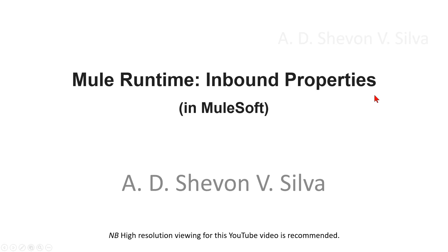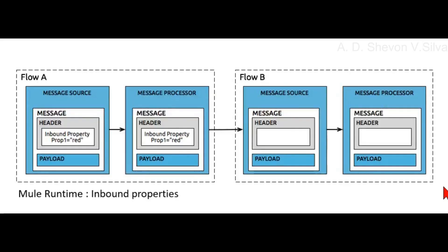Mule runtime inbound properties. The inbound properties are immutable, automatically generated by the message source, and cannot be set or manipulated by the user. They contain metadata specific to the message source that prevents scrambling of data formats or other processing mishaps later in the message life cycle.